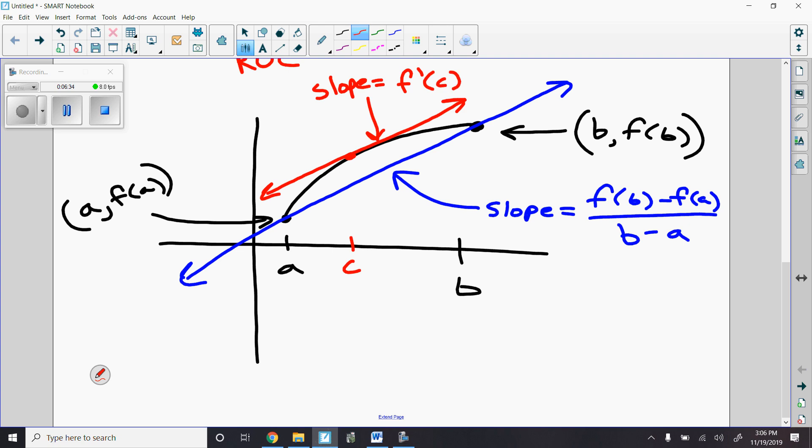So as you can tell, the slope of the red line here and the slope of the blue line match, though I might not have picked the exact perfect spot there, but you get the idea. There has to be a C somewhere where that slope matches the average rate of change F of B minus F of A over B minus A. So the equation that we associate with this is F prime of C equals F of B minus F of A over B minus A. And this is true for any continuous function on a closed interval and differentiable on an open interval function, okay?